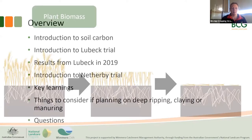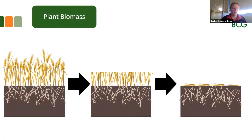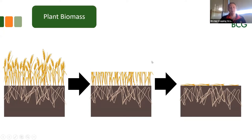Starting with an introduction to soil carbon. The key to soil carbon — the initial starting point — is plant biomass. We grow the crop and then at harvest you come along and take the grain off, but we leave the stubble behind. Eventually the stubble slowly drops down and sits on the soil. All of it is plant biomass, but what's important for soil carbon is the plant biomass that's left behind.